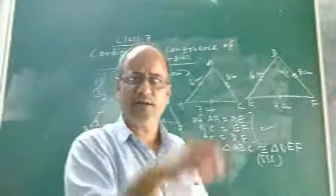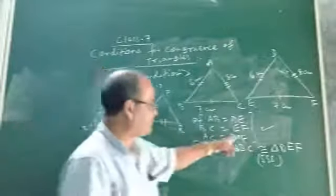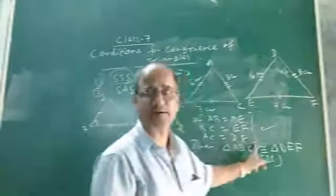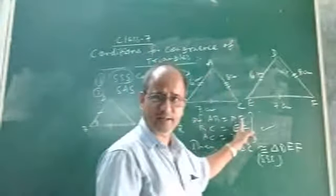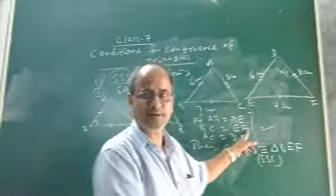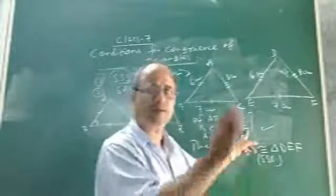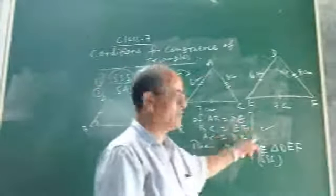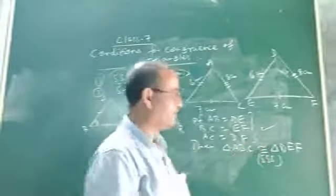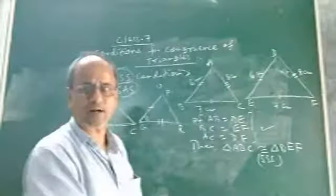Now the next: side-angle-side. In order to understand SSS, these three are matching parts — one matching part is AB and DE, the corresponding sides. As I told you, matching parts means corresponding sides or corresponding angles of two triangles. Now let us discuss what is the side-angle-side congruence condition.